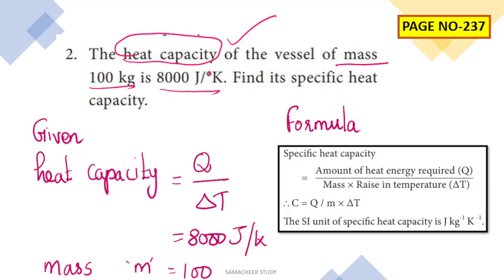Mass is equal to 100 kilograms. Now we will calculate using the formula for specific heat capacity, which equals the amount of heat energy required divided by mass into rise in temperature. This can also be written as specific heat capacity equals heat capacity divided by mass.